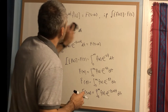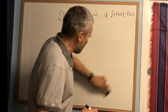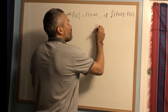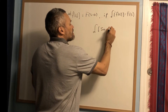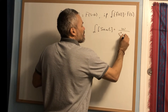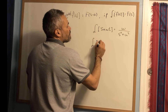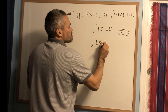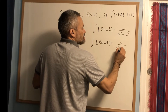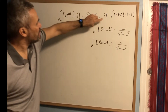As an application of this formula, we have two important results. We already know that the Laplace transform of sin(ωt) is ω over s² plus ω², and the Laplace transform of cos(ωt) is s over s² plus ω².